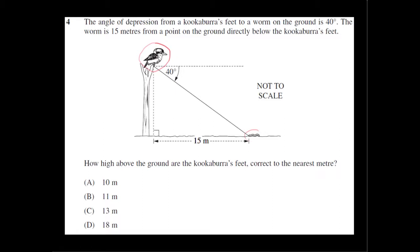that's the worm, and the angle of depression is the angle between an imaginary horizontal downwards towards the line that joins the kookaburra to the worm. So that's 40 degrees, that's the angle of depression.